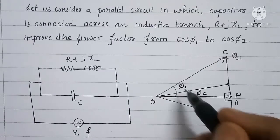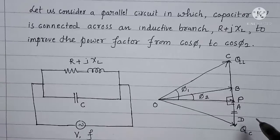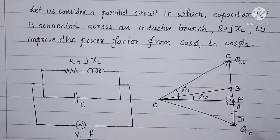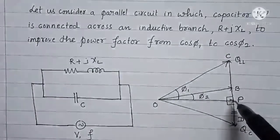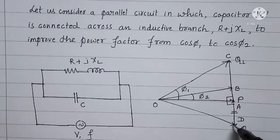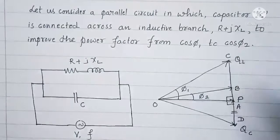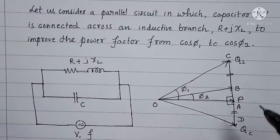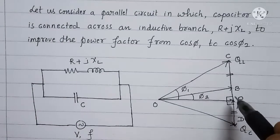After improving the power factor from cos φ1 to cos φ2, you can observe that the reactive power consumed by the capacitor and the reactive power consumed by the inductor are in phase opposition. Because of that, part of the reactive power consumed by the inductive branch will be cancelled by the reactive power consumed by the capacitor — that is equal to BC. AD is equal to BC, which is cancelled out. After cancelling, the reactive power consumed by the entire circuit will be equal to AB only.